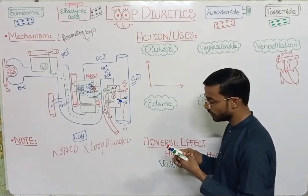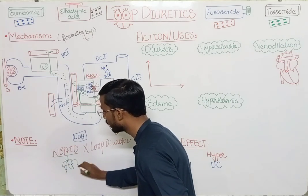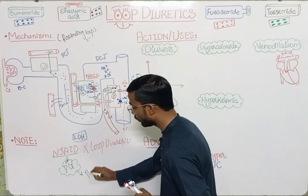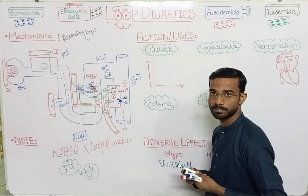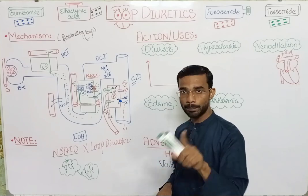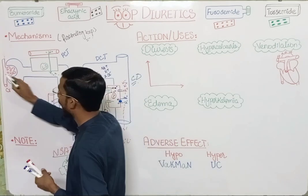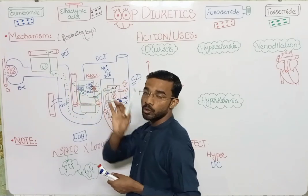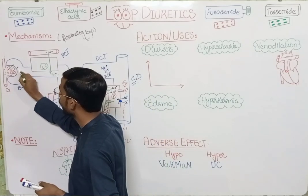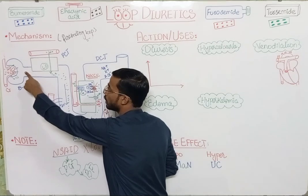You should never take NSAIDs along with loop diuretics. NSAIDs block the production of prostaglandins. If there is no prostaglandin, blood flow to the glomerulus will also be decreased. NSAIDs block renal prostaglandin production, and if there is no prostaglandin, blood flow through the glomerulus decreases.